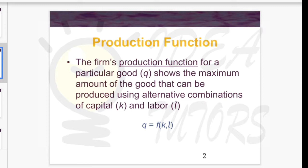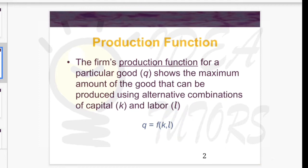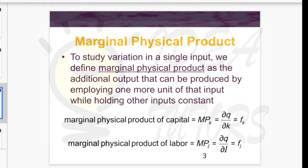Usually the inputs are capital and labor. Here capital is denoted with K and labor with L, and Q is the good being produced. The production function is the relationship between input use and output gained — output Q is a function of inputs K and L.